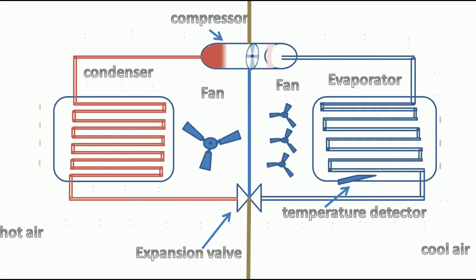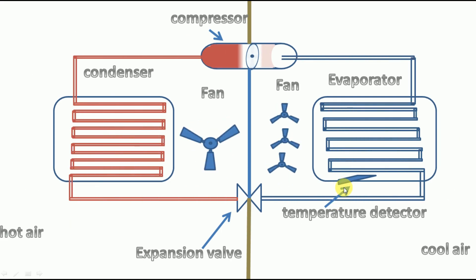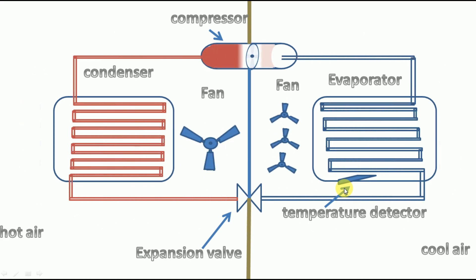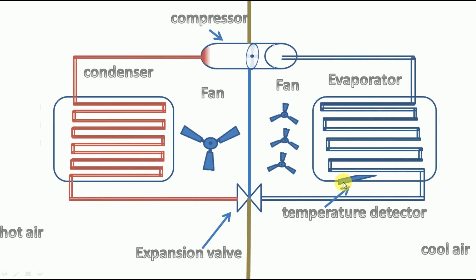Step 1. When we turn on the AC, we fix the temperature in the remote. The meter in the AC starts to compare the fixed temperature and the room temperature. The room temperature is detected by temperature detector which is placed near evaporator.